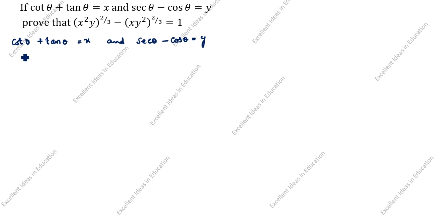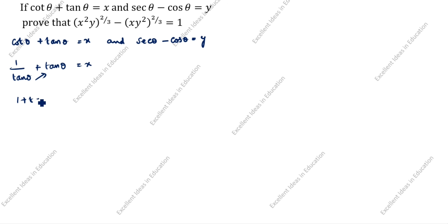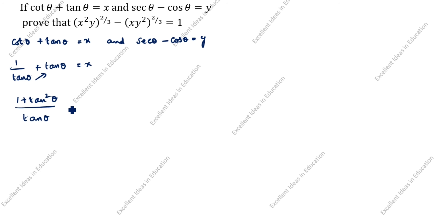How will we split cot theta plus tan theta equal to x? Cross multiply: 1 plus tan squared theta, that is tan squared theta divided by tan theta, is equal to x.